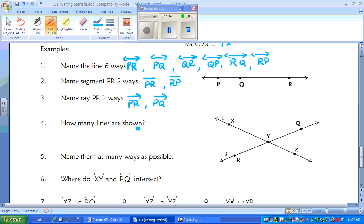How many lines are shown? How many lines do you see here? Well, you see one line here because it has arrows going both ways and one line here. So there are two lines shown in this example.